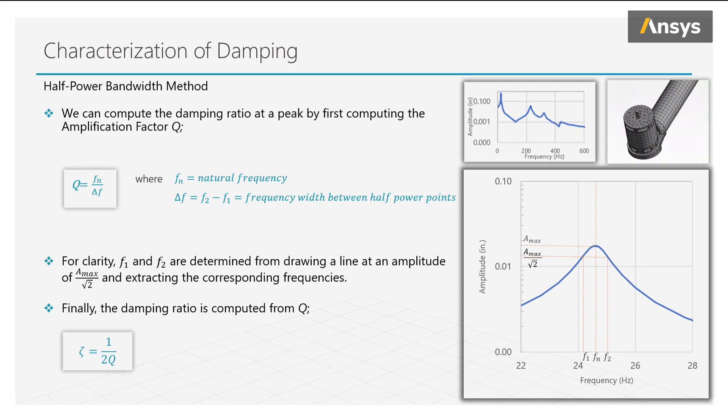We can compute the damping ratio at a peak by first computing the amplification factor Q. Q gives us a measure of how undamped a system is, which is the opposite of damping ratio. Large Q signifies small amounts of damping.